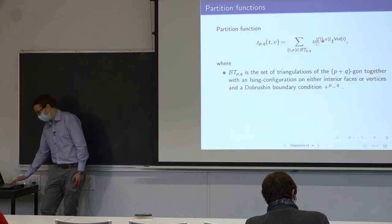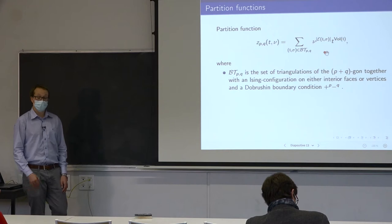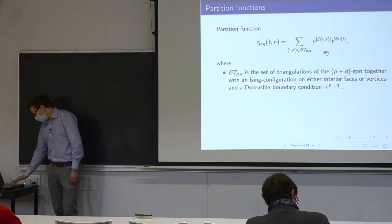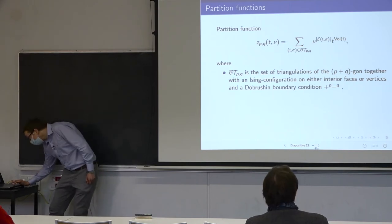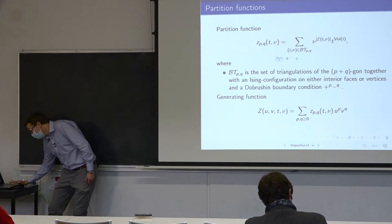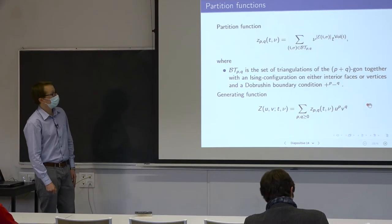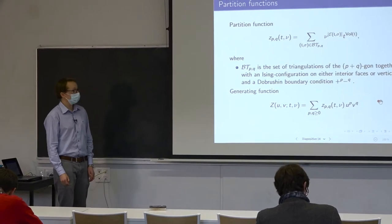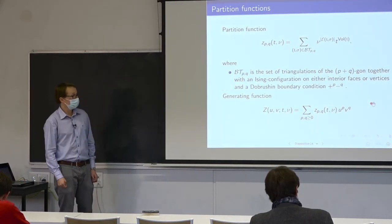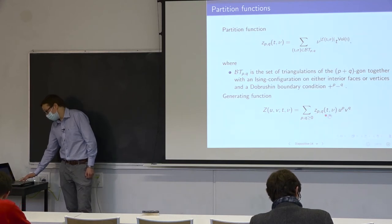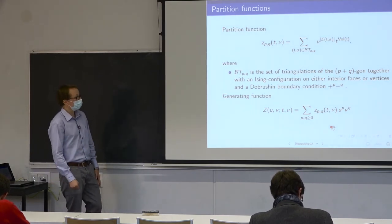We fix the boundary length p plus q, assigning p plus spins and q minus spins as boundary conditions. We encode these triangulations by a partition function, summing over all triangulations of the (p+q)-gon with those boundary conditions and an Ising configuration. The weight involves nu — a coupling constant enumerating the number of monochromatic edges, essentially the exponential of the Ising inverse temperature — and t, a coupling constant for the volume.